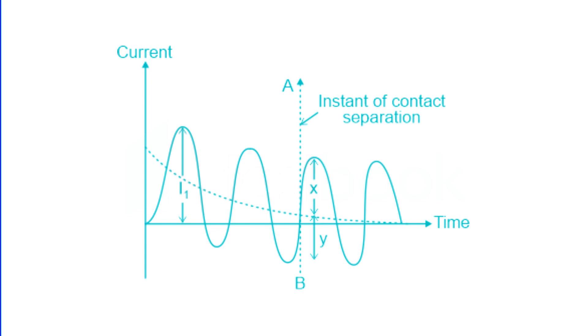There are two specifications to consider: symmetric breaking current and asymmetric breaking current. In India, the breaking current is specified in terms of symmetric breaking current, whereas in the USA it is specified as asymmetric breaking current.